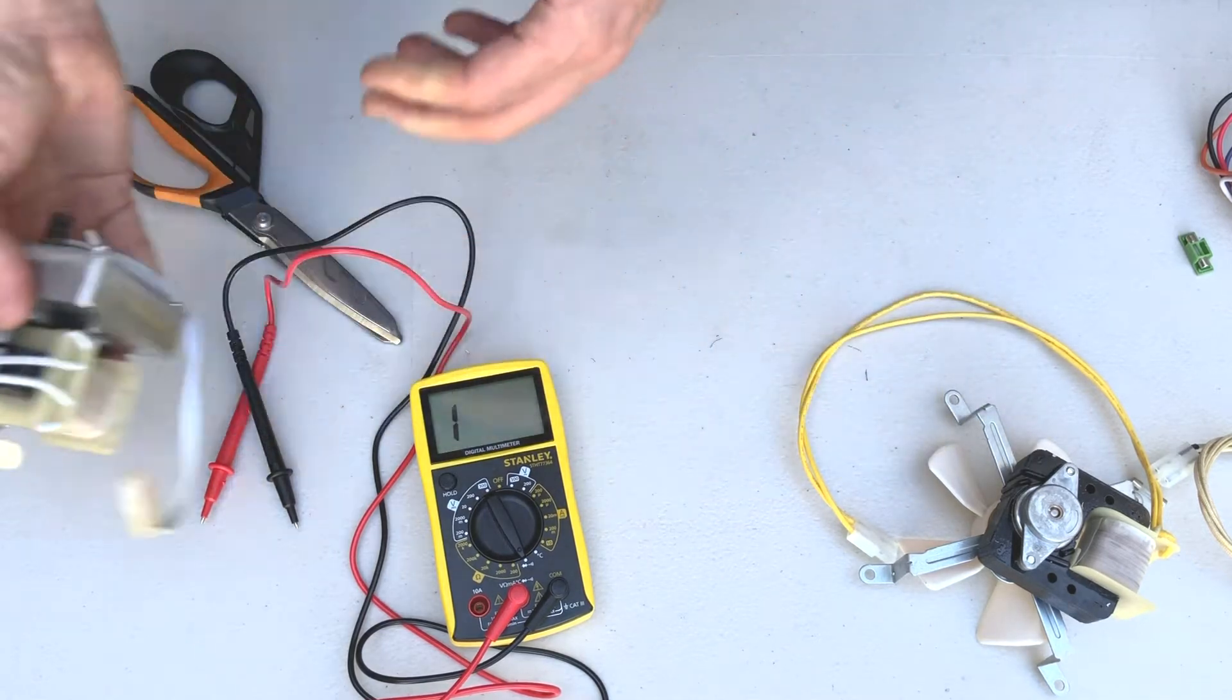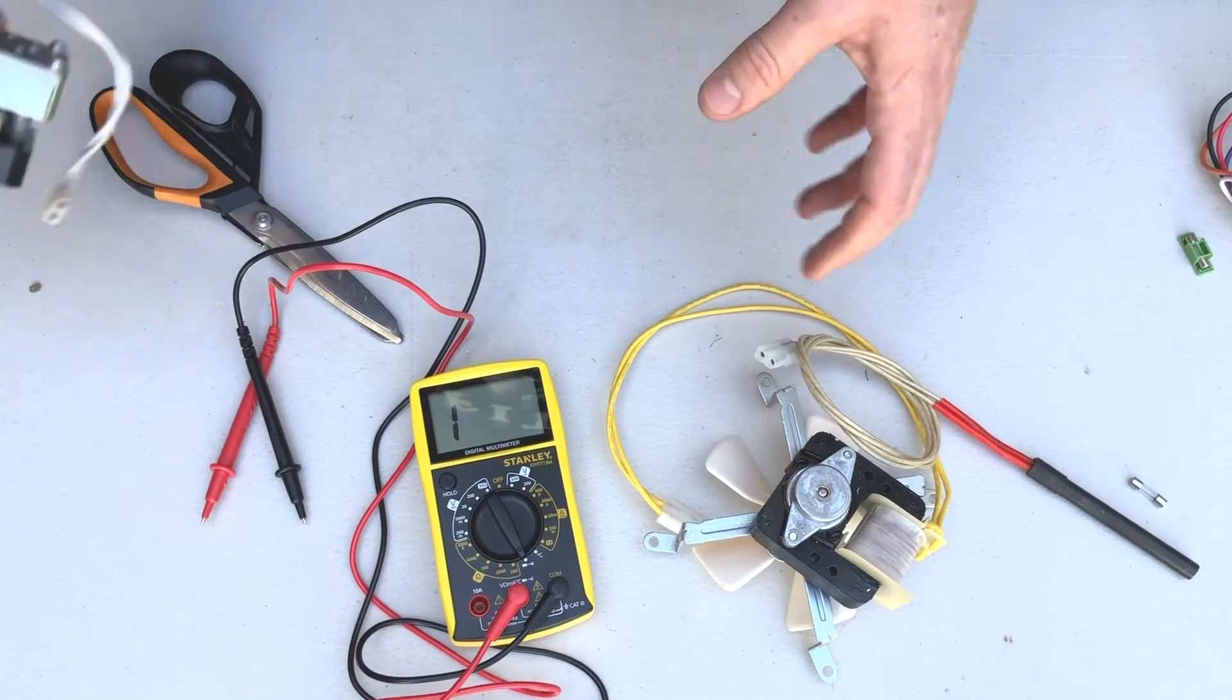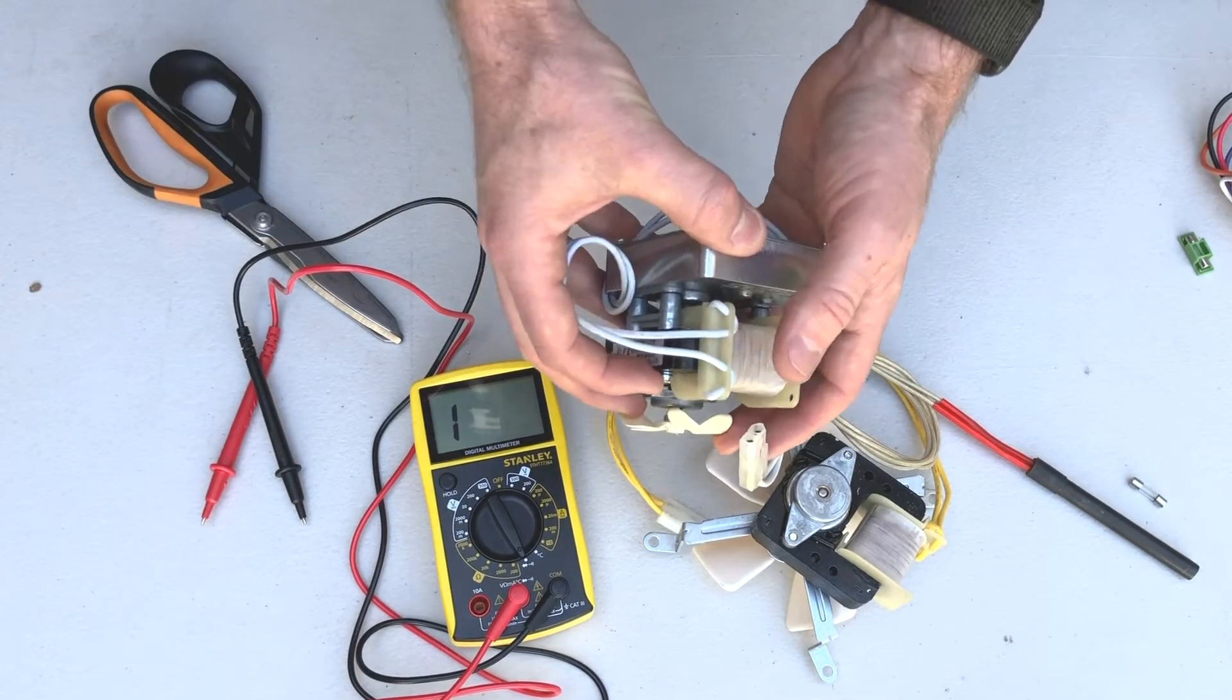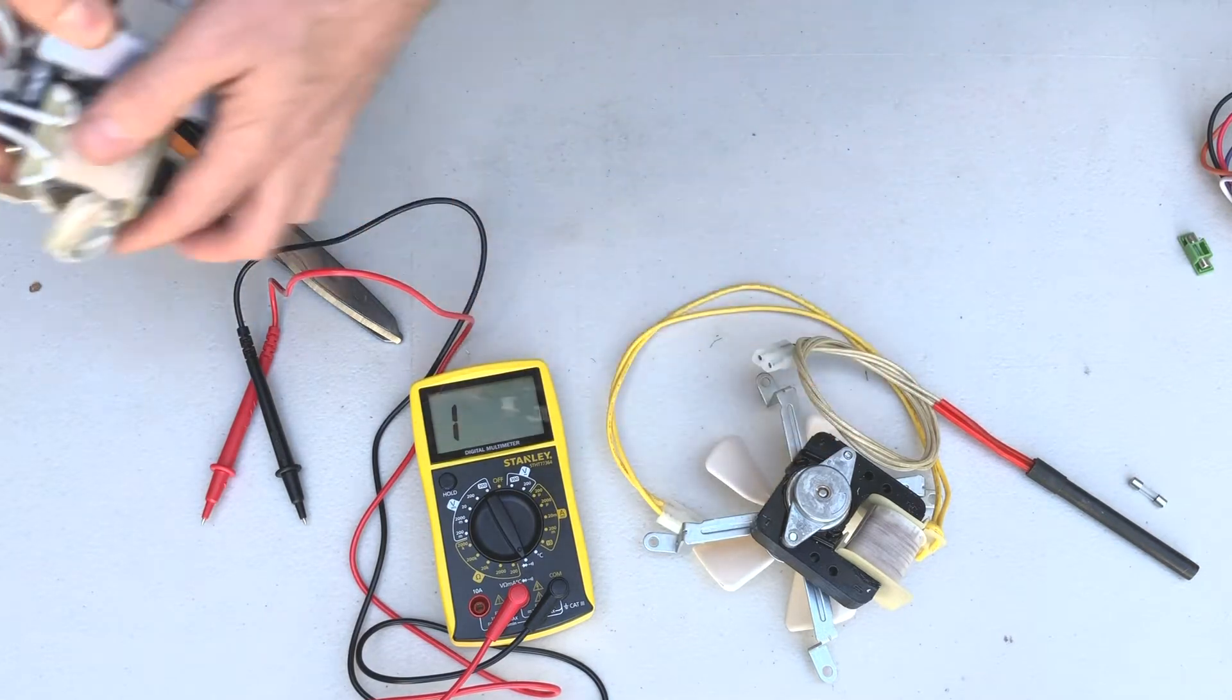So by using a multimeter, we can determine very quickly which of those three items, those three consumers of electricity inside the grill are the ones causing the problem. Order the right component and get that changed out and fixed.